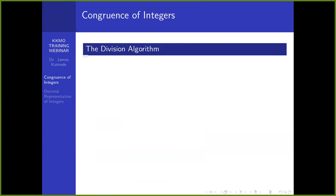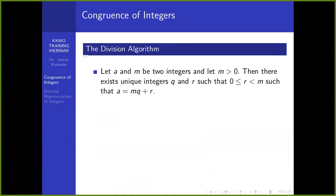First of all, we look at this division algorithm — it's more of a theorem. It says the following: if we have two integers A and M, and we let M be a positive integer, then we can always find unique integers Q and R, where R is strictly less than M, such that A is equal to MQ plus R.